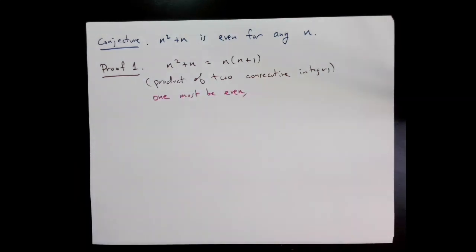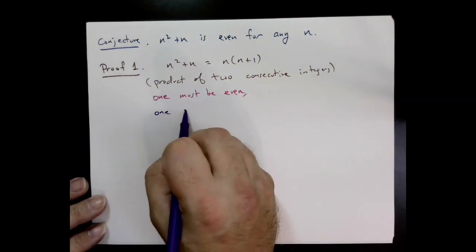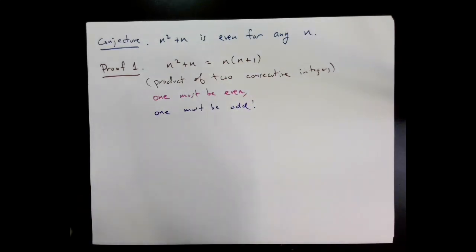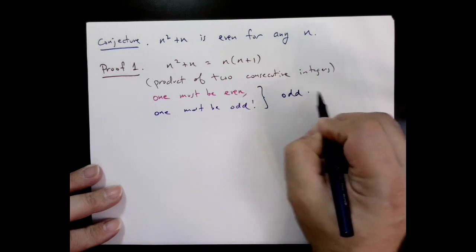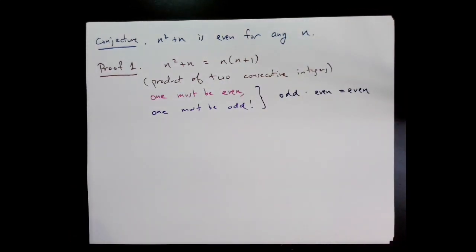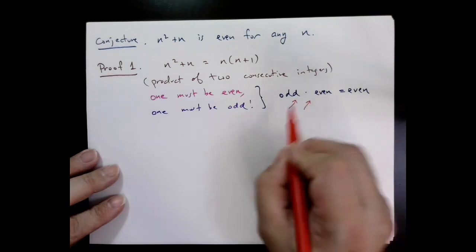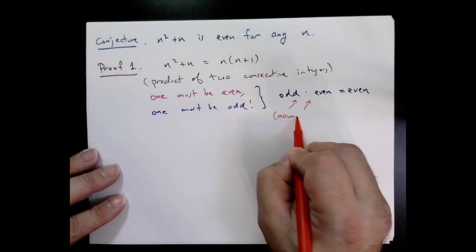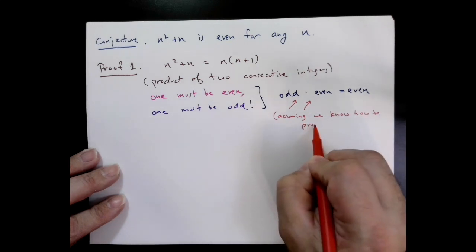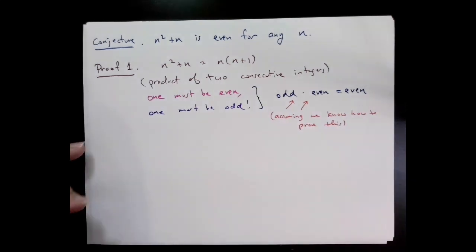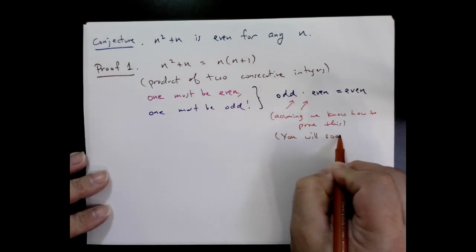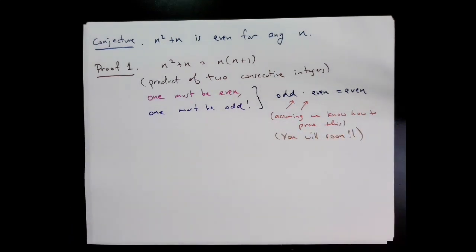One proof is just to say, look, I see this function n² + n—I can factor that and that's n(n + 1), and then I can observe that's the product of two consecutive integers. It's a number and then the next number times each other. Well, one thing about two numbers in a row is that always one of them is even and one is odd. So I always have an odd number times an even number, and odd times even is always even. That's it, that's the proof.